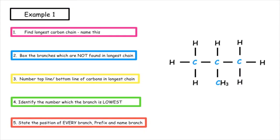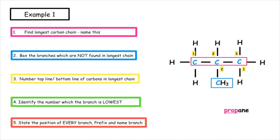Let's have a go at naming this branched-chain alkane. The first thing we do is find the longest carbon chain - I can see the longest chain has three carbons in a consecutive row. Using page 9, that alkane with carbon-to-carbon single bonds would be known as propane. I then put a box around the branch not found in the longest chain, and number the top and bottom lines in reverse order. The branch is on position two on both sides, so the name is 2-methylpropane.